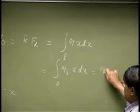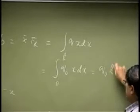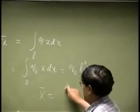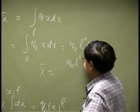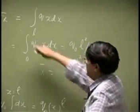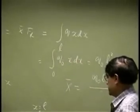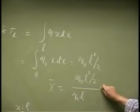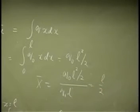So that's Q0 L squared over 2. So your x bar would be Q0 L squared over 2 divided by FR which is Q0 L. So this comes out to be L over 2.